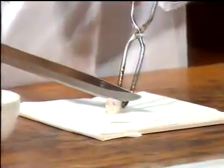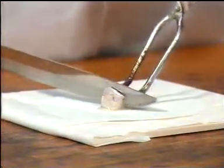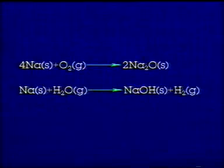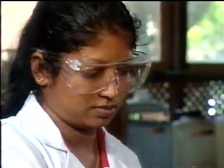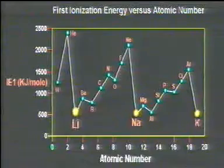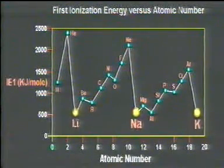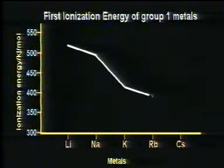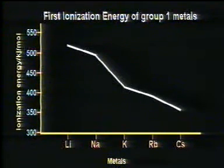Let us study some chemical reactions of sodium. Sodium is a soft metal that rapidly tarnishes in air, losing its silvery appearance, because sodium reacts with oxygen and moisture to form oxide and hydroxide respectively. Sodium reacts with water, liberating hydrogen and forming its hydroxide. The chemistry of alkali metals is dominated by their low first ionization energies. As you go down the group, the first ionization energy decreases.